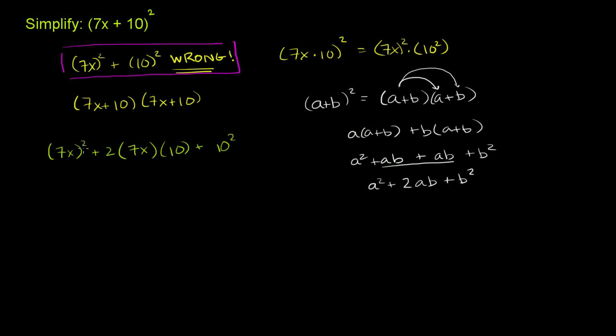So the difference between the right answer and the wrong answer is that you have this middle term here that you might have forgotten about if you did it this way. And this comes out when you're multiplying all of the different combinations of the terms here. And if we simplify this,